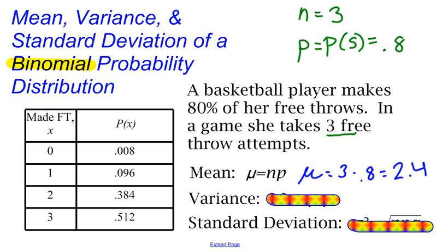So there's the average number of free throws that we can expect this girl to make. If she takes three free throws, on average, she's going to make 2.4 of those free throws.